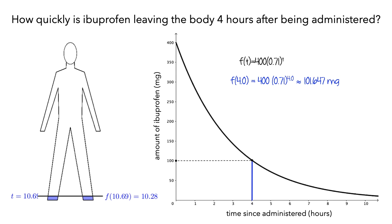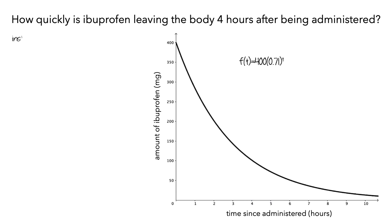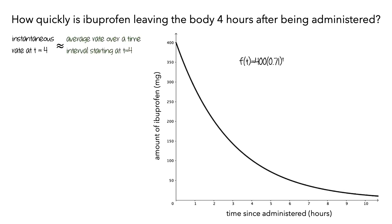Next, we need to try to approximate the instantaneous rate at t equals 4 by computing an average rate over a time interval starting at t equals 4 hours. In this scenario, the average rate is a change in the amount of ibuprofen per a change in time.